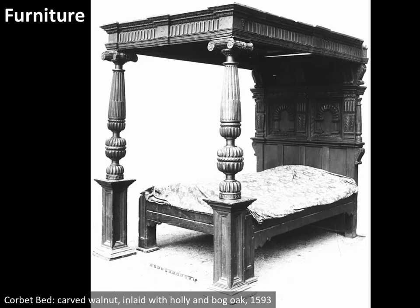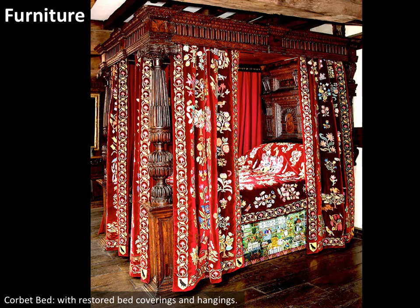Here we have the Corbett bed, so-called because it's from the Corbett family from Corbett Castle. Again, heavy and rectangular, with that tester overhead to hang all the fabrics from — beds kind of carry through from the medieval time. By the way, a bed was the most valuable possession a person had. Here is that same bed with period fabrics attached — the assorted bed coverings and the hanging fabric pulled around you, kind of like in a Harry Potter movie, so you could sleep within that small curtained area.